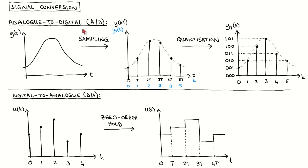It is useful to think of the analog-to-digital conversion as a two-step process. The first step is sampling, which selects the values of the continuous time signal at the sampling instance. We denote the sampling period by capital T and the discrete time index by k. For the resulting digital signal, we drop the sampling period and write it only in terms of the discrete time index. The second step is quantization. Since a digital processor cannot represent arbitrary real numbers but only a finite number of digital words, the signal values are approximated as the closest digital word that the processor can represent.